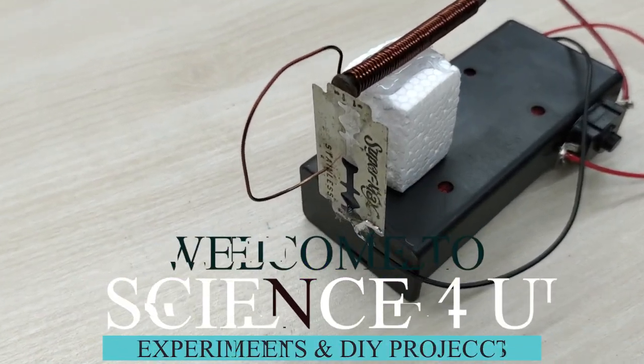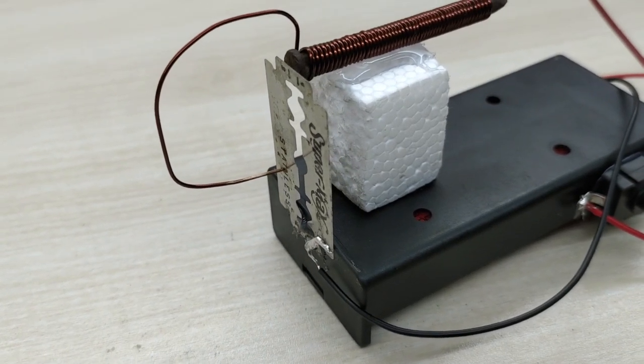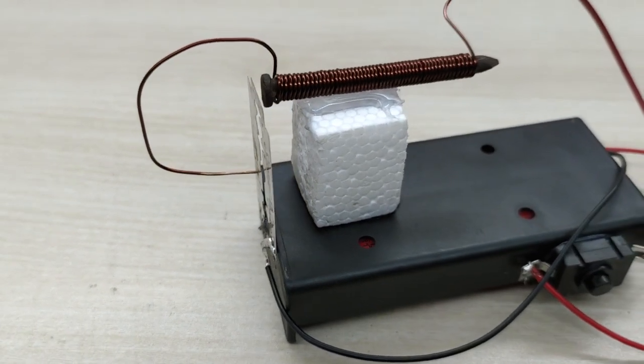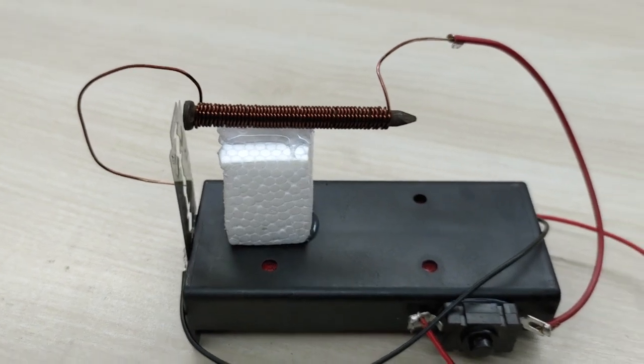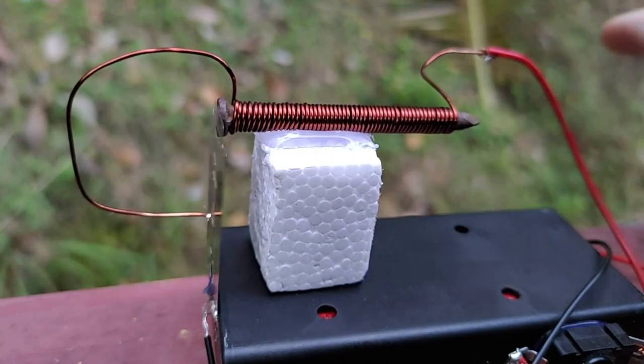Hello friends, welcome to Science for You. Today we will learn how to make a unique electric bell. The bell is very compact and is assembled on a battery pack. The bell uses a razor blade as the vibrating component.